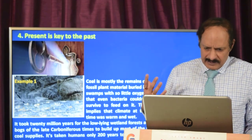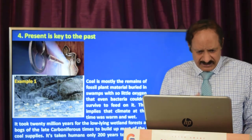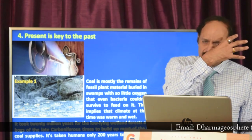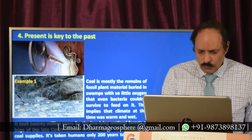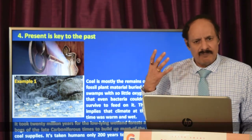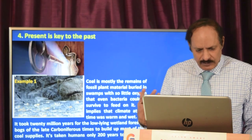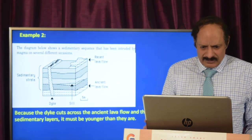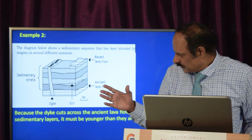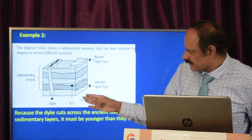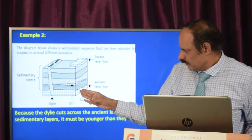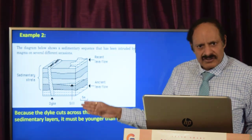The fourth principle is 'the present is key to the past.' For example, coal is mostly the remains of fossil plant material buried in swamps with so little oxygen that even bacteria can't survive — this implies the climate at that time was very warm and wet. It took 20 million years for the low-lying wetland forests and peat bogs of the late Carboniferous to build up the world's largest coal supplies, yet it has taken humans only 200 years to burn most of them. You can also see sedimentary sequences formed on several different occasions — ancient lava flows, recent lava flows, sedimentary strata, and intruding dikes, where the intruding dike is the youngest and the sediments below are the oldest.